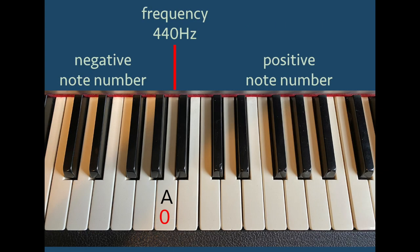For notes above A equal to 440 Hz, the note number is positive, whereas for notes below, the note number is negative. Here are some examples.